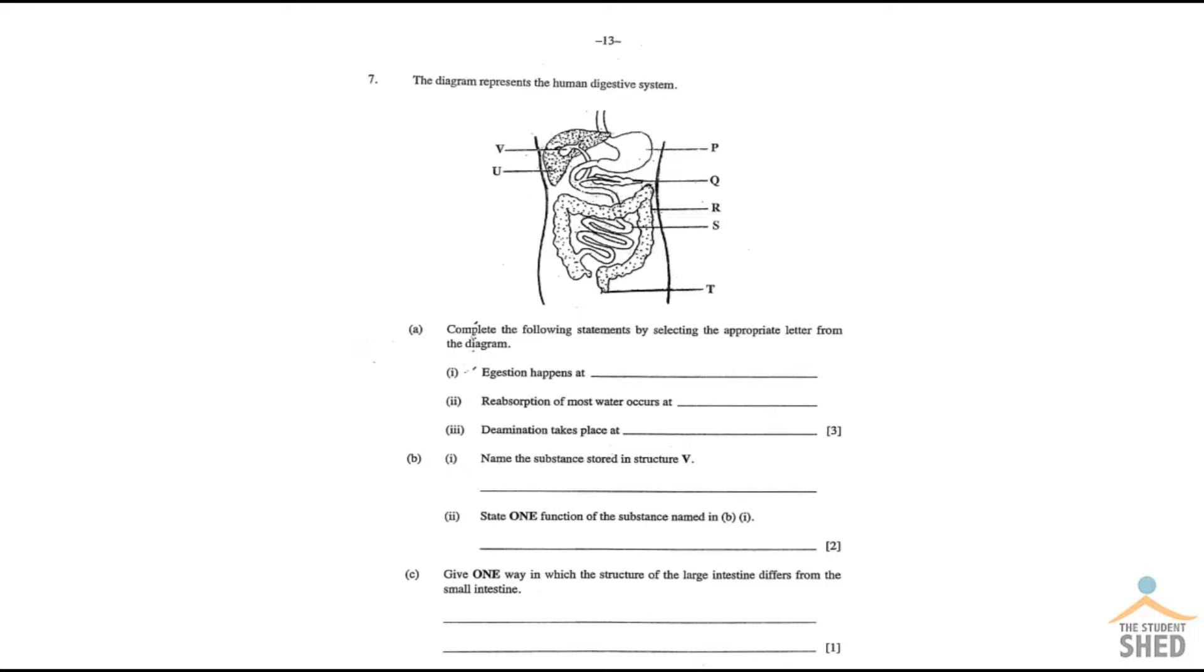The first question is asking you which structure does egestion happen at. Now what you need to be looking at is to think what ingestion means versus egestion. So ingestion of food happens in the mouth, egestion happens at the anus. So which of those letters there is the anus, and the answer of course is letter T.